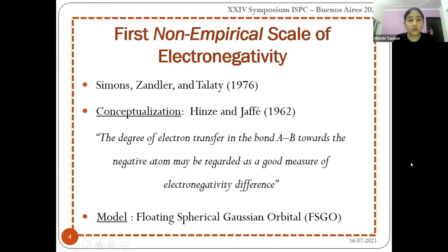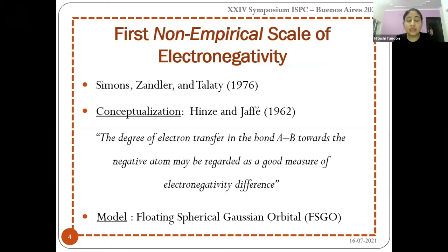I would now move towards the non-empirical scale of electronegativity, since our work particularly relates to this scale. This scale was first proposed by Simons, Zander, and Talati in 1976, based on Hinze and Jaffe's conceptualization — that the degree of electron transfer in the bond AB towards the negative atom may be regarded as a good measure of electronegativity difference. Simons and his group applied this concept to the model known as FSGO, the floating spherical Gaussian orbital approach.